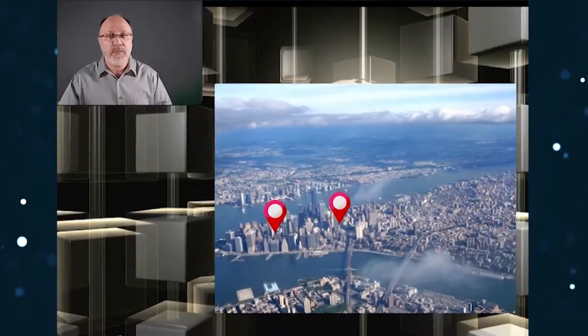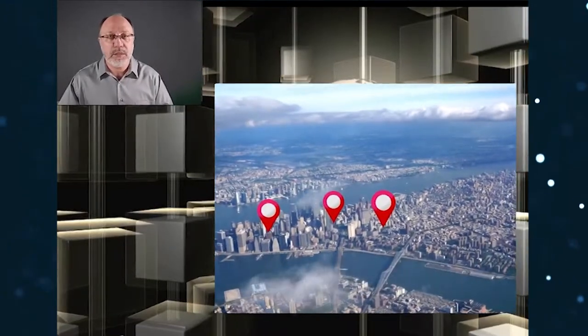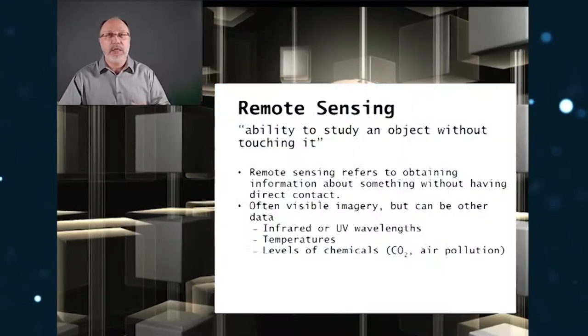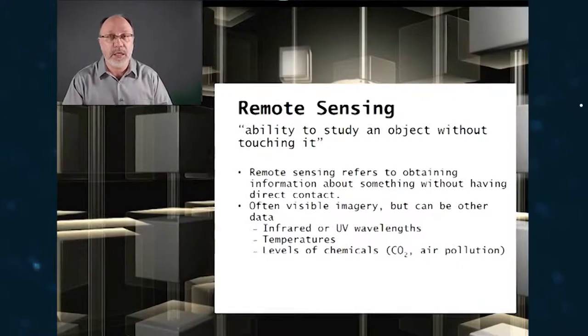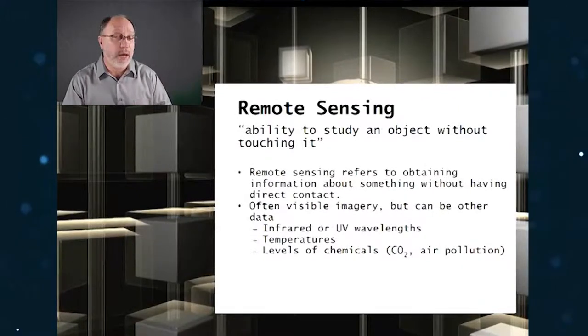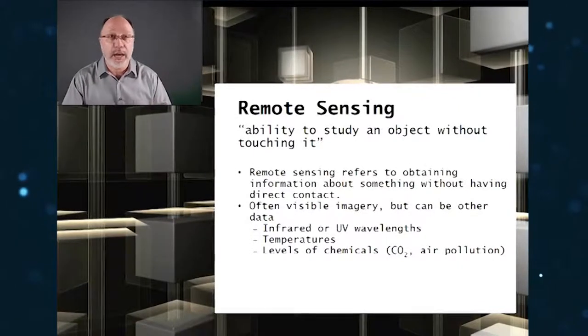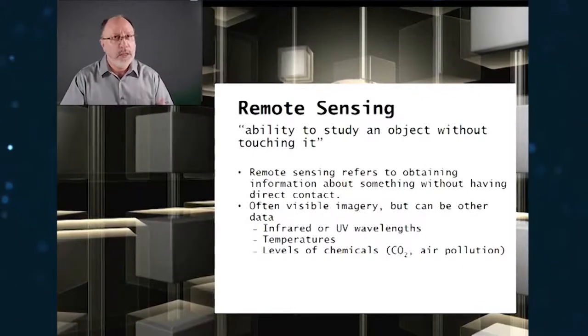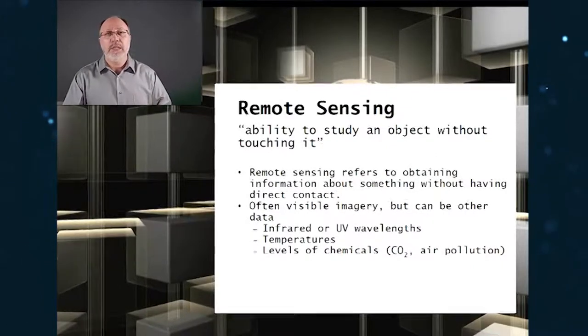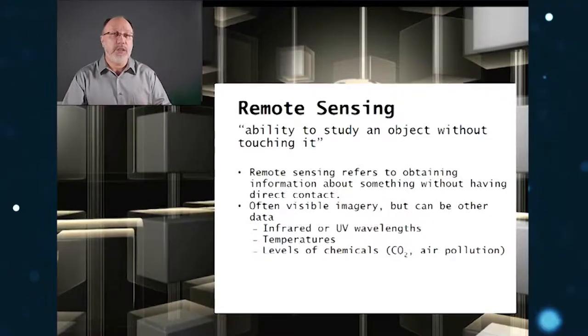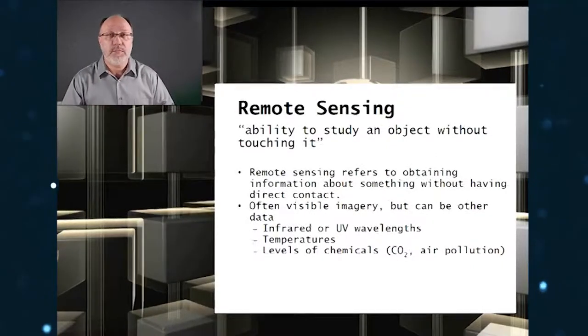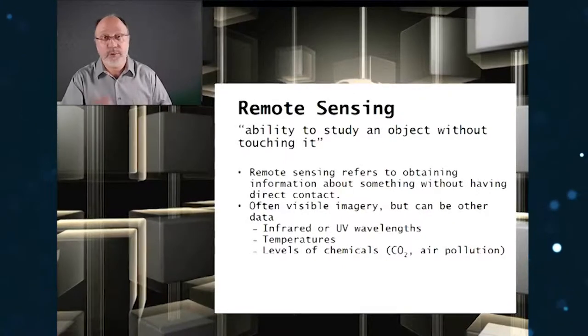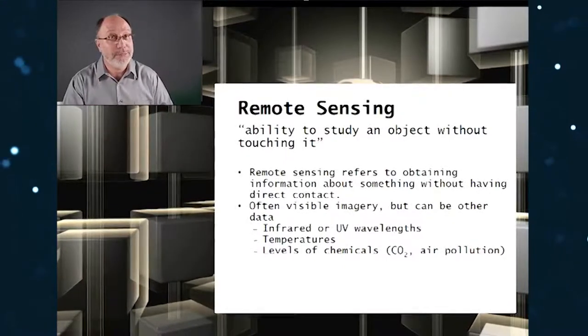There are two types of remote sensing: active and passive. Active remote sensing systems send a beam of energy to the surface and analyze the energy reflected back — like flash photography or LiDAR. Passive remote sensing systems record wavelengths of energy radiated from the surface, like normal photography or even our own eyes.